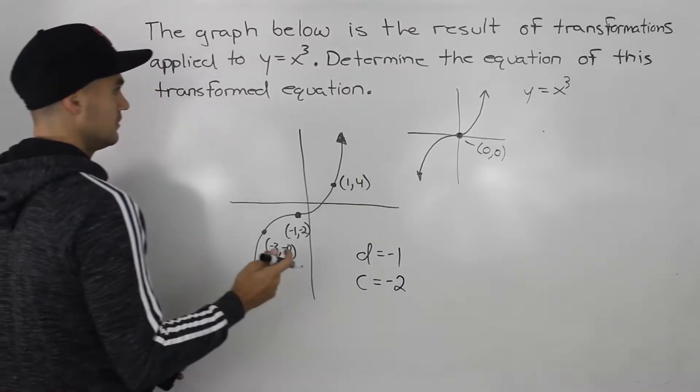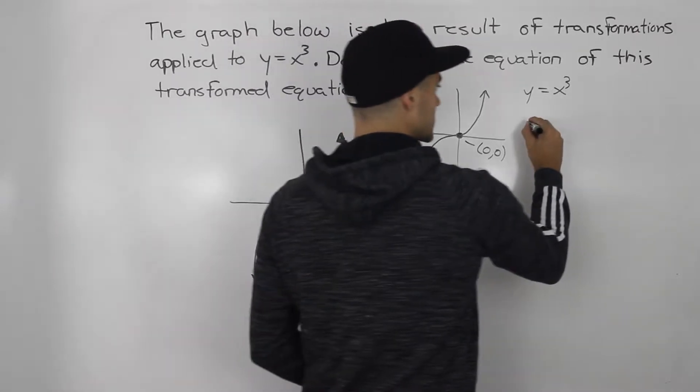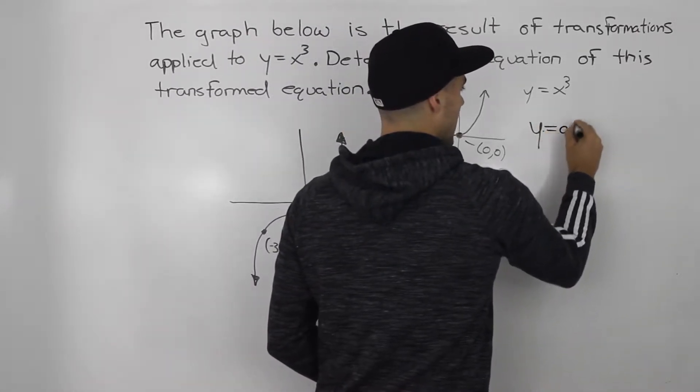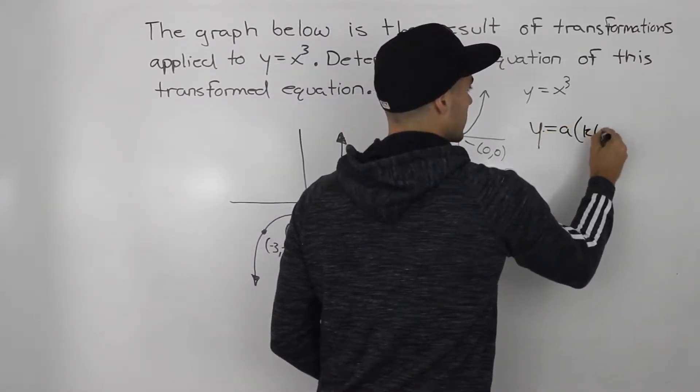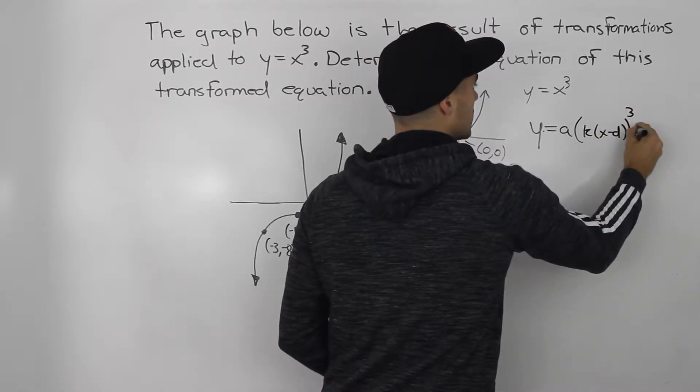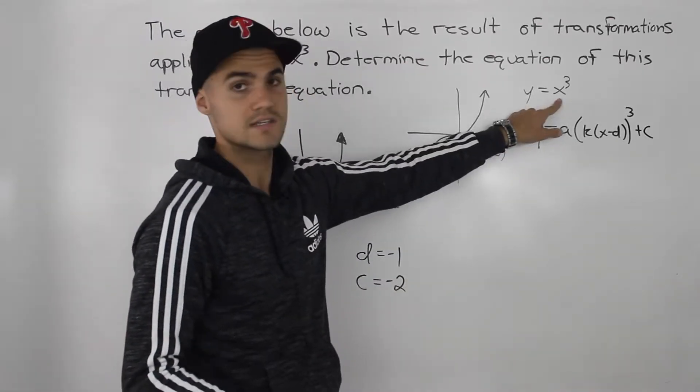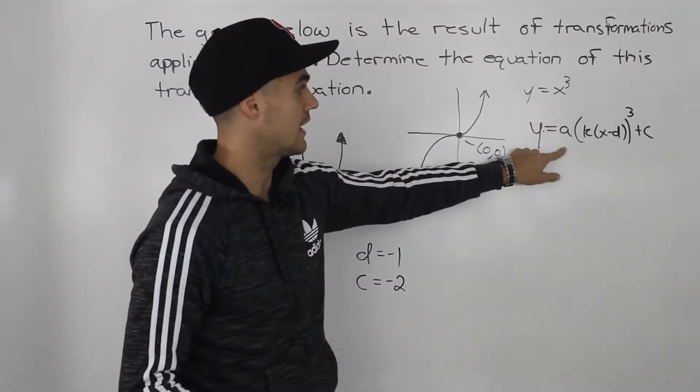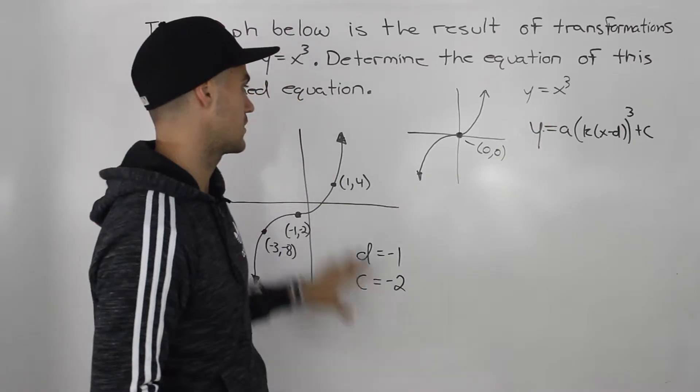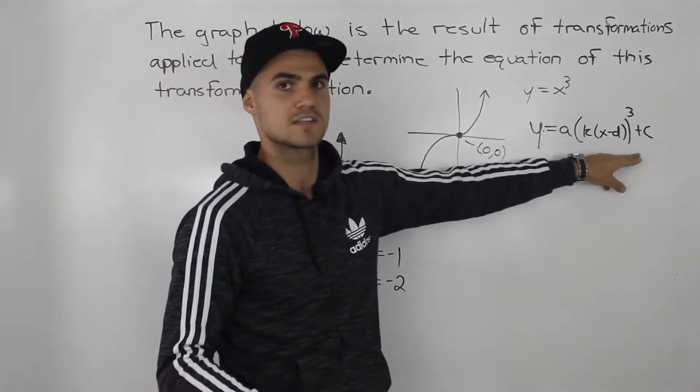Now, in general, when we are transforming y equals x cubed, the form it's going to take is what? y equals a bracket k bracket x minus d to the power of 3 plus c. If we take this x cubed parent function and then just generally transform it, not specifically to this question, just in general, the a, k, d, and c value.